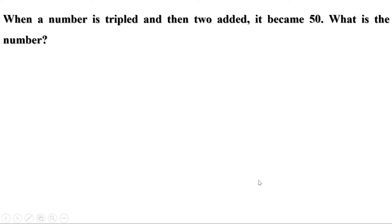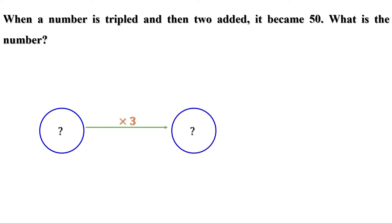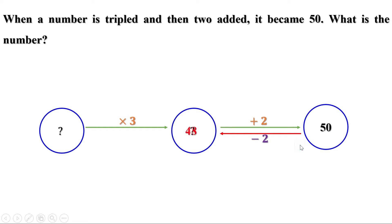Another problem: when a number is tripled and then 2 is added, it becomes 50. What is the number? First it is multiplied by 3, then 2 is added to the result and we get 50. To find the number, let us come back: subtract 2 from 50 to get 48. The number was multiplied by 3 to give 48, so divide by 3 to get 16.